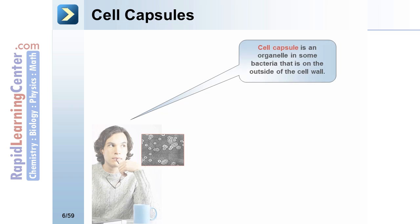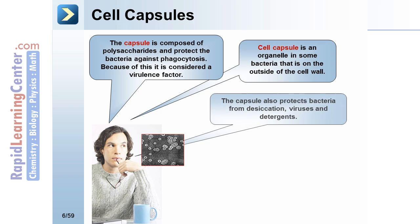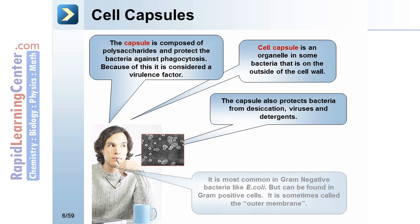Cell capsules. The cell capsule is an organelle in some bacteria that is on the outside of the cell wall. The capsule is composed of polysaccharides and protects the bacteria against phagocytosis. Because of this, it is considered a virulence factor. The capsule also protects bacteria from desiccation, viruses, and detergents. It is most common in gram-negative bacteria like E. coli, but can be in gram-positive cells. It is sometimes called the outer membrane.